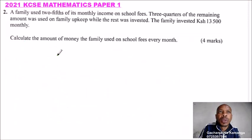Question number two, 2021 KCSE Mathematics Paper One. A family used two-fifths of its monthly income on school fees. Three-quarters of the remaining amount was used on family upkeep, while the rest was invested. The family invested 13,500 Kenyan shillings monthly. Calculate the amount of money the family used on school fees every month.